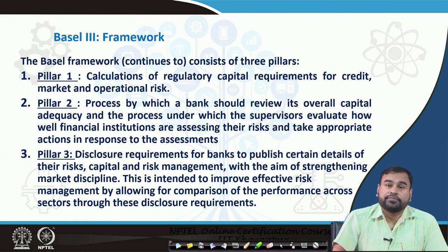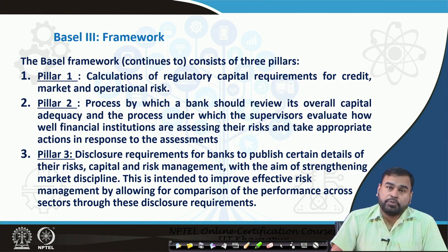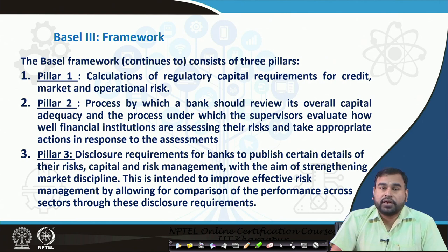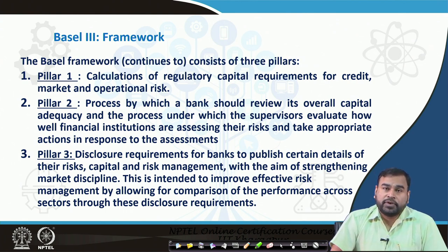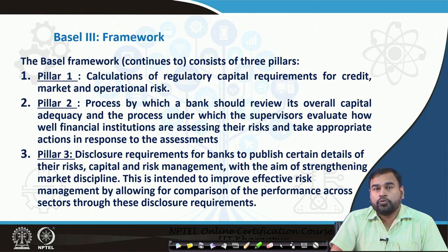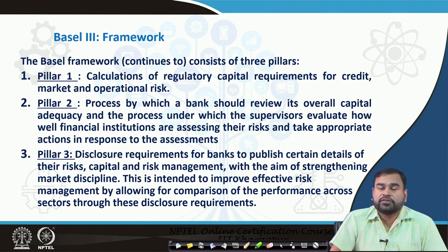Basel 3 also has three pillars. Pillar 1 is the calculation of regulatory capital requirements for credit, market, and operational risk — which was there in Basel 2 but with certain modifications. Pillar 2 talks about supervision: how the process can be reviewed for overall capital adequacy and how supervisors evaluate how well financial institutions are assessing risk, and what supervisory policy the policy makers are taking to regulate that, and how loopholes are overcome by regulatory bodies using different implementations of regulatory norms.